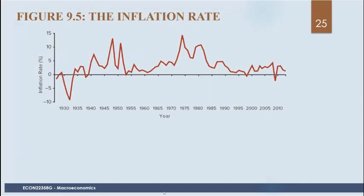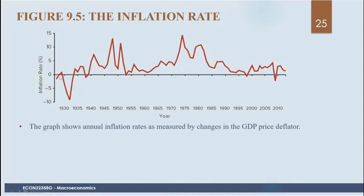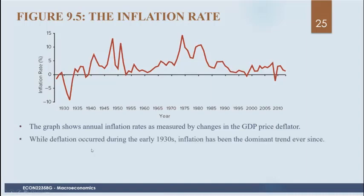Here's the inflation rate in Canada from 1930 up to around 2015. We can see some clear patterns. The Great Depression is clearly marked, with prices falling quite substantially in that period. One thing to notice is how volatile inflation is — we've had inflation as high as close to 15% in certain years, especially in the early 1970s. Mortgage rates at that point were sometimes up to 30%.